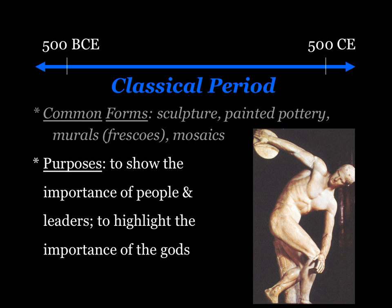The purposes of classical art were to show the importance of people, especially political leaders, and to highlight the importance of the gods. The Classical Period coincides with the heyday of the later Greek city-states, the Roman Republic, and the Roman Empire — basically the tail end of true paganism in Europe.